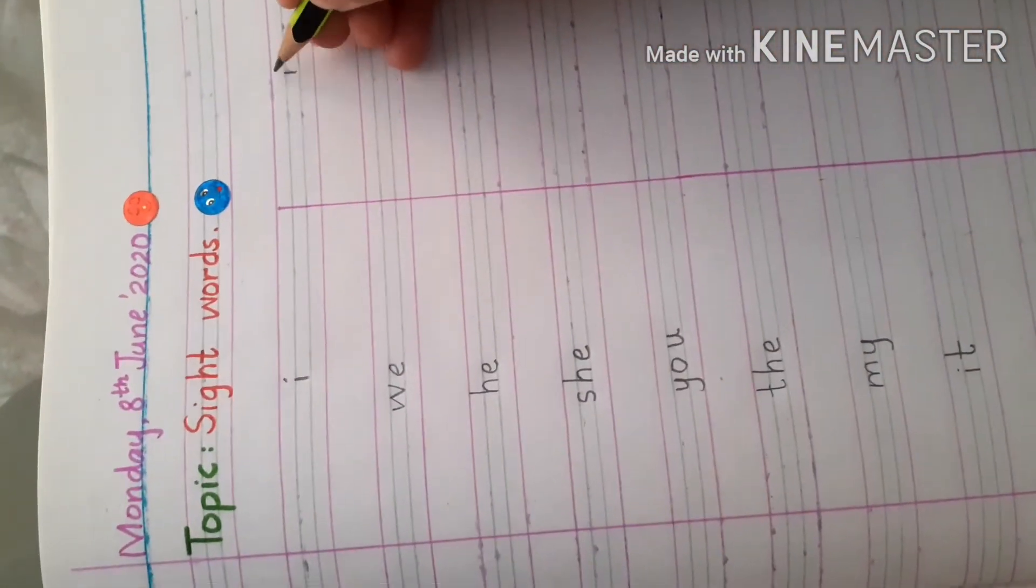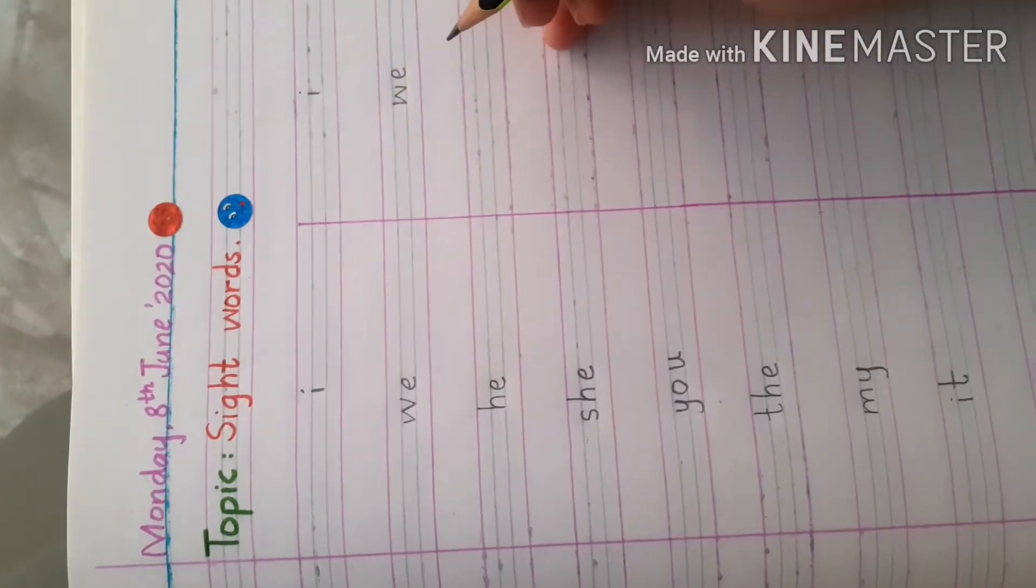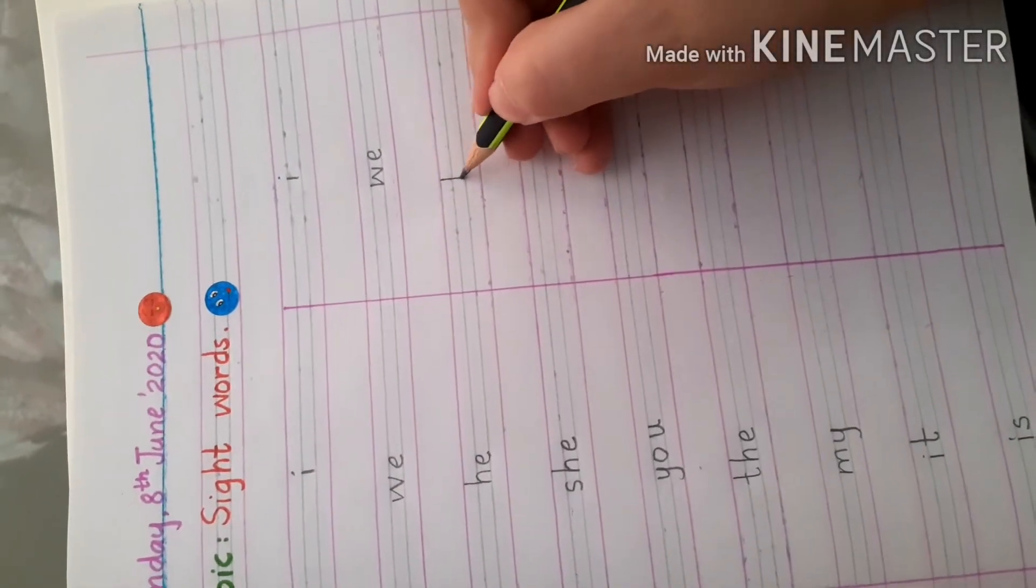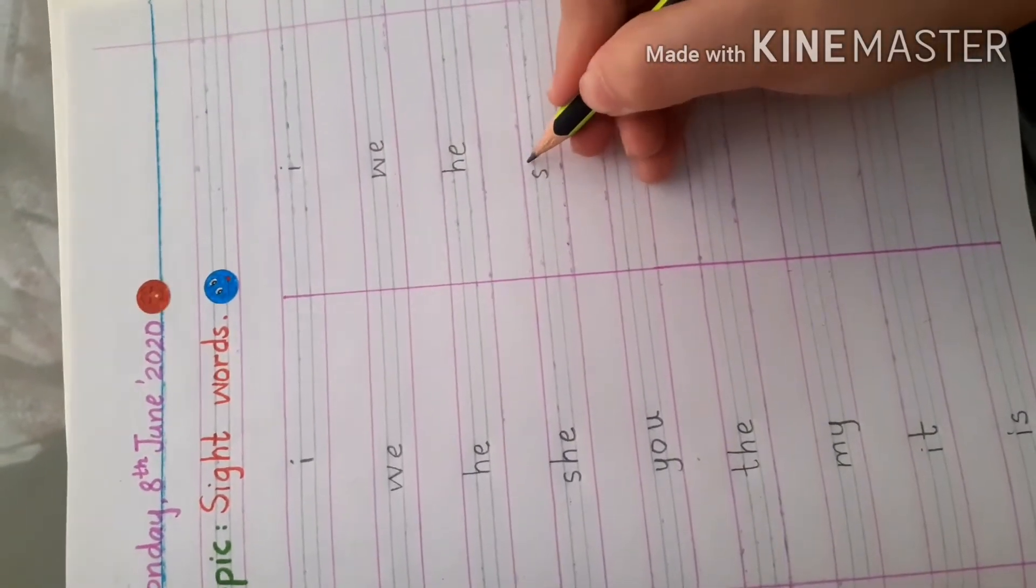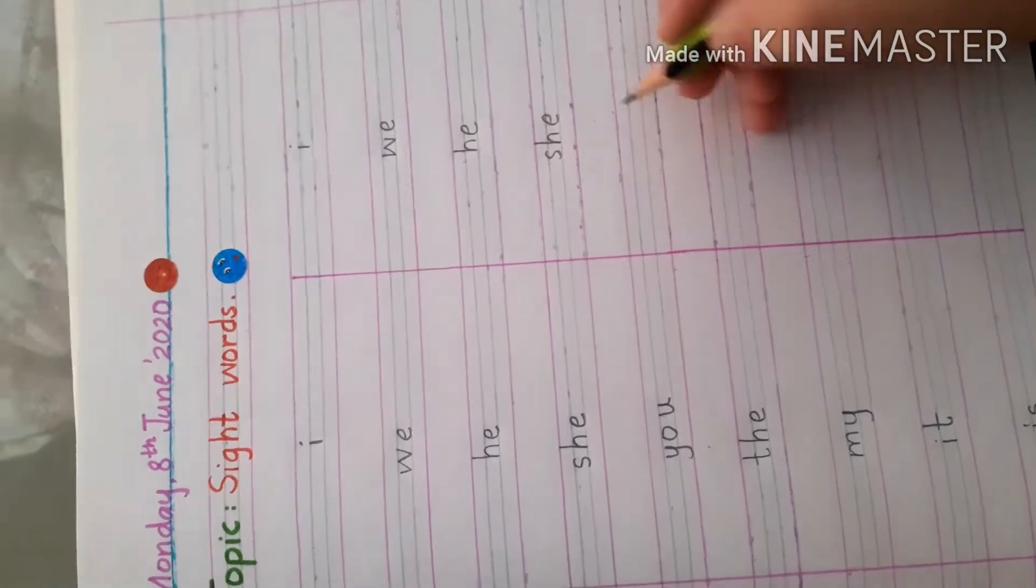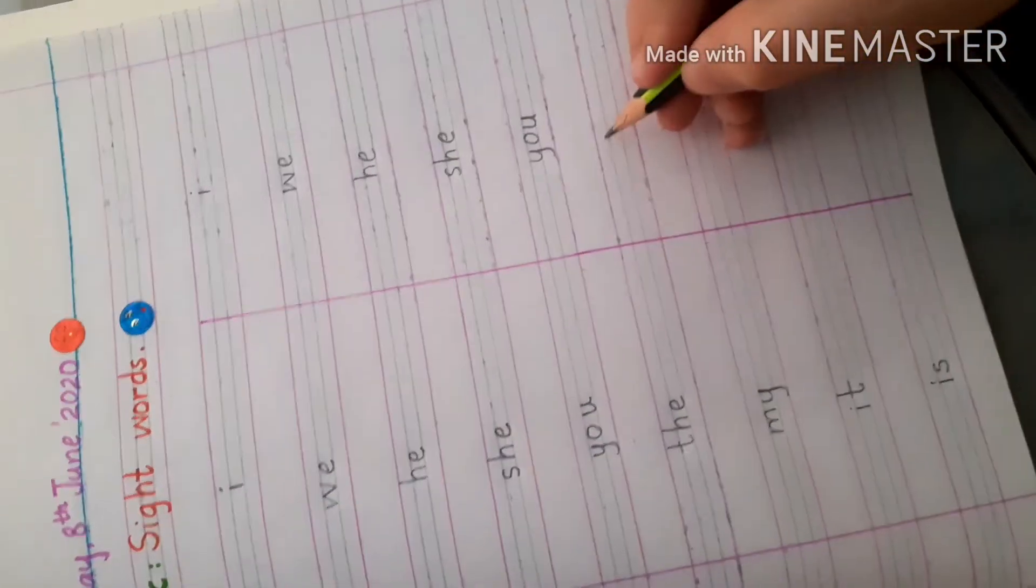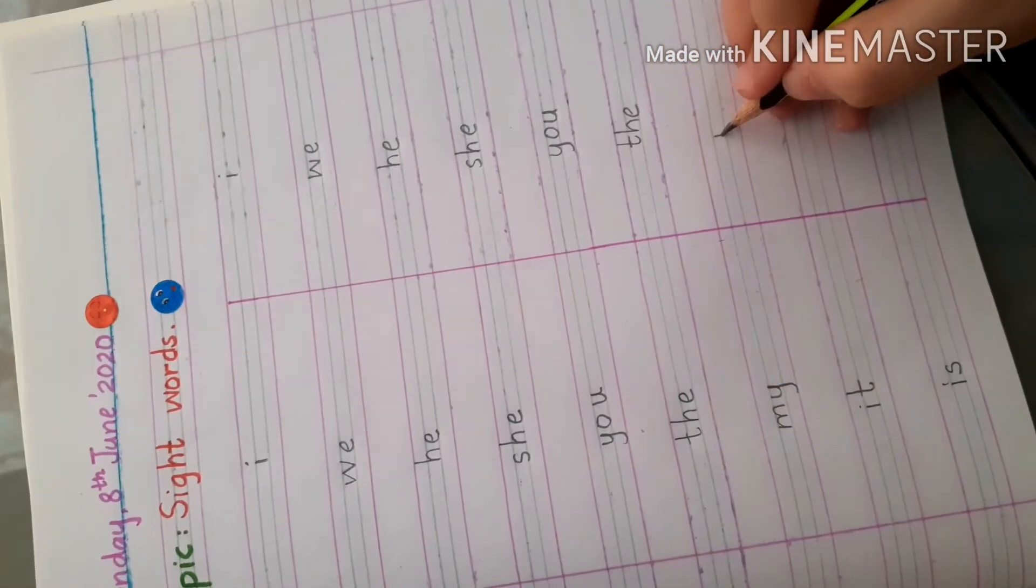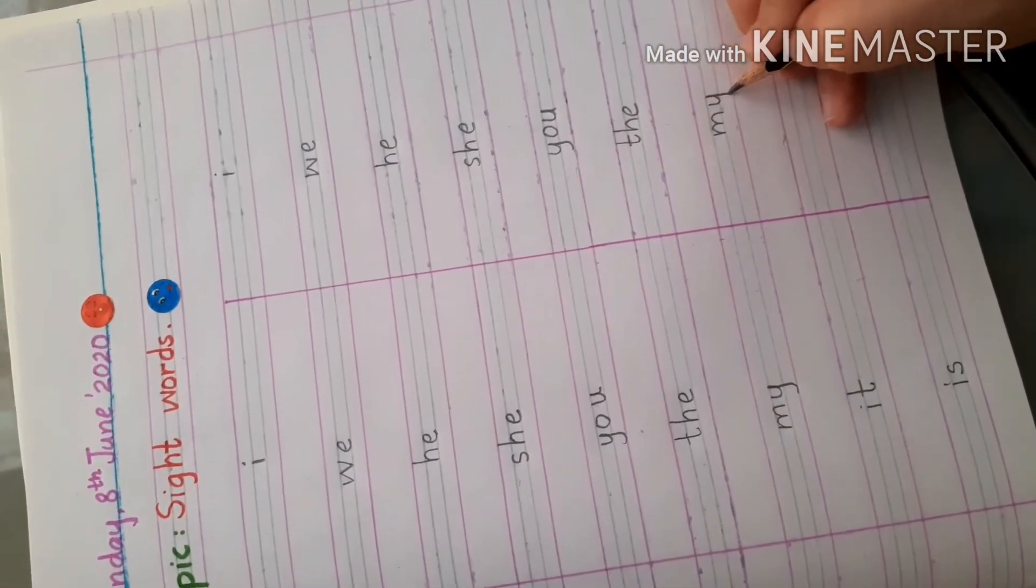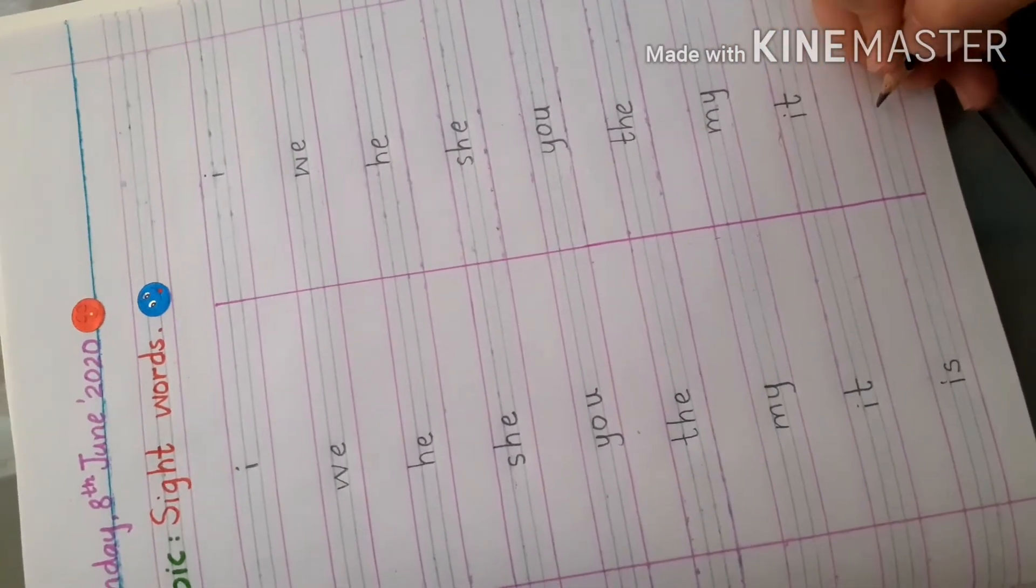I. W-E, we. H-E, he. S-H-E, she. Y-O-U, you. T-H-E, the. M-Y, my. I-T, it. I-S, is.